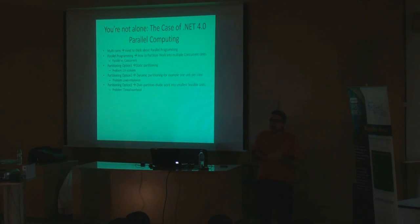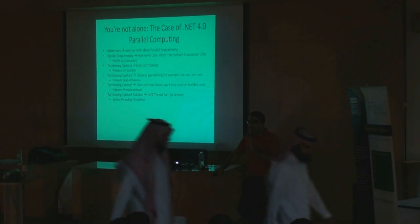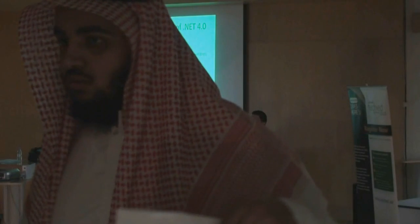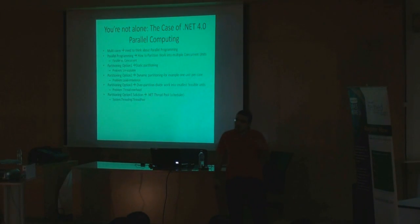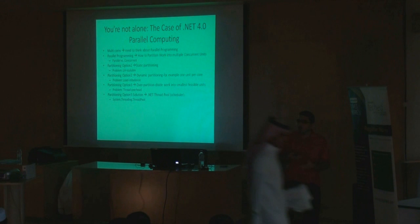So the problem is that threads are heavyweight processes — it's really expensive to create and kill a thread. That's why the .NET thread pool, which is not 4.0 stuff — it's old — doesn't create and kill threads. It creates a thread, and when the thread finishes, it puts the thread on a queue. When another job is created, it takes the thread from the queue and assigns that job to the thread. So that was great. So why do we need .NET 4.0? This solution was already there.